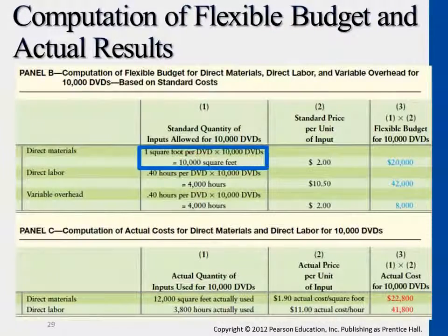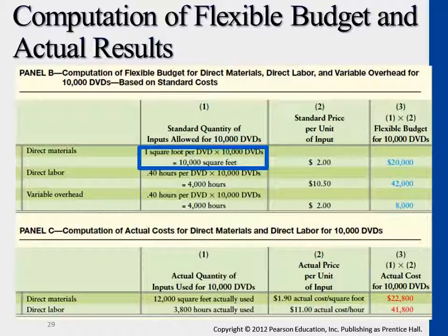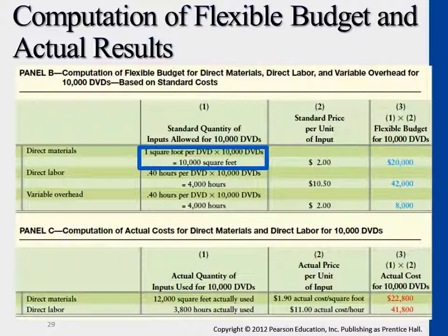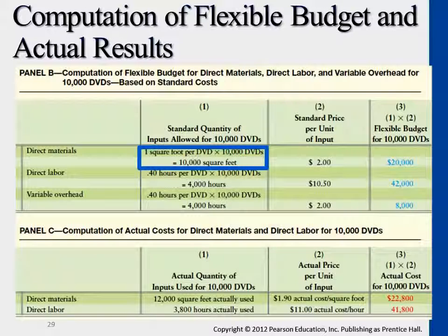We break down that table into more detailed information here. So what are we looking at? What do these two tables tell us for direct materials? The upper panel, Panel B, gives us the flexible budget information. The bottom table here is the actual transactions — actual cost and quantity that happened.